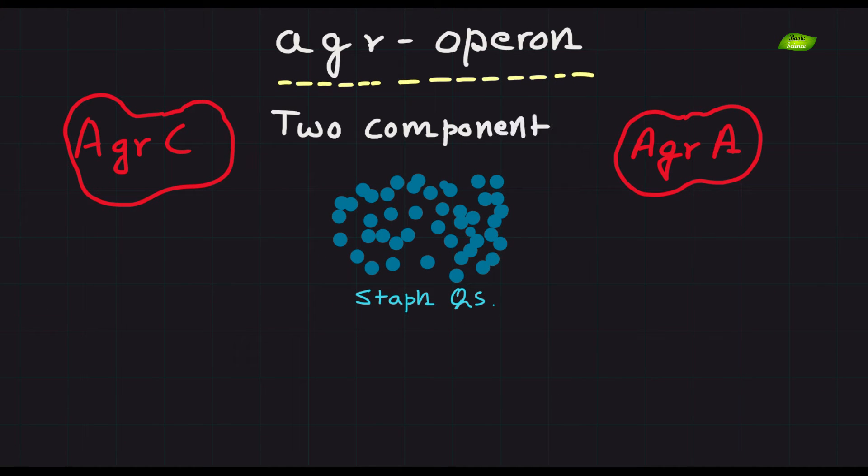At the heart of the quorum sensing mechanism is the two-component signaling transduction system, composed of AGRC and AGRA.